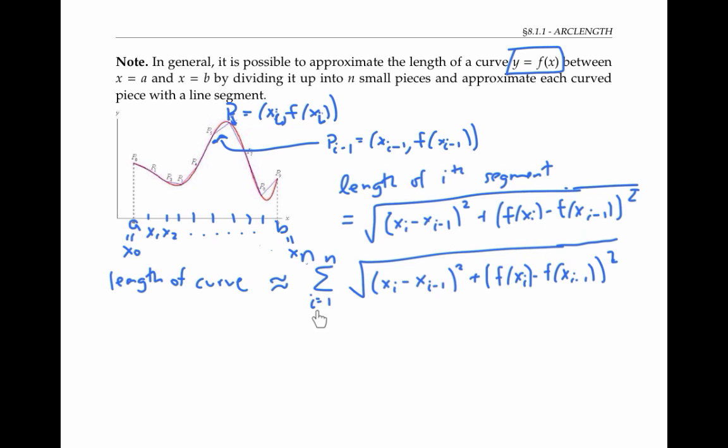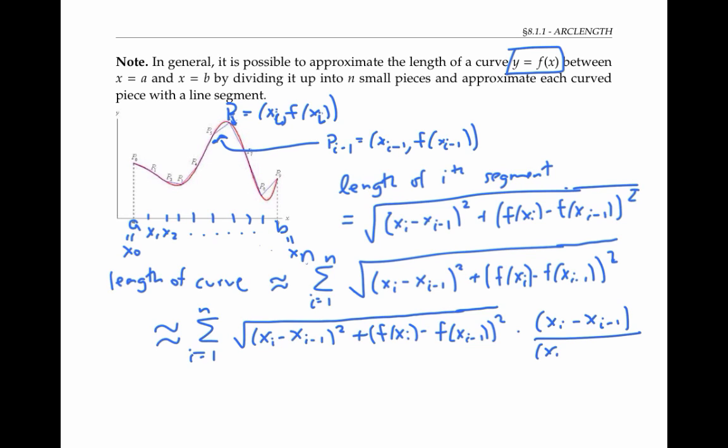This is starting to look a little bit like a Riemann sum because of the sigma sign, but it's missing the delta x that I usually have out here. So I'm going to use a trick. I'm going to multiply each term of this expression by (x sub i minus x sub i minus 1) divided by (x sub i minus x sub i minus 1). This doesn't change the value of my expression, but it does introduce a delta x over delta x into my equation because delta x represents the width of a sub-interval, and that's equal to x sub i minus x sub i minus 1.